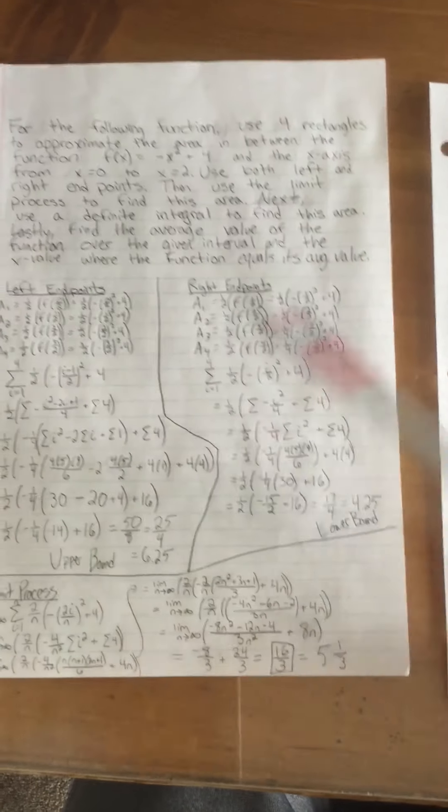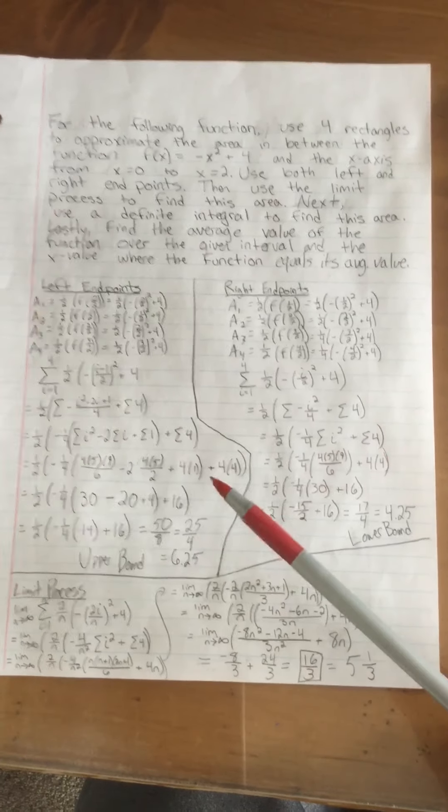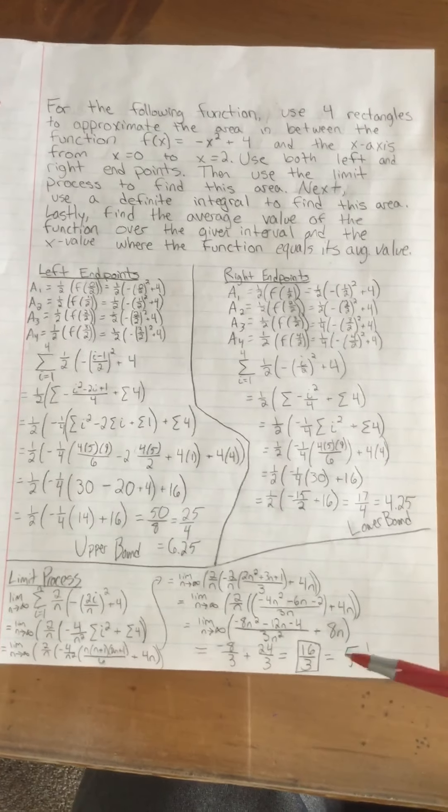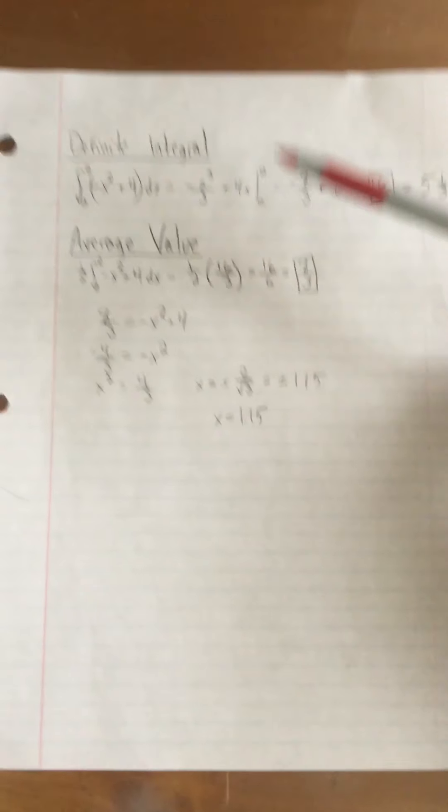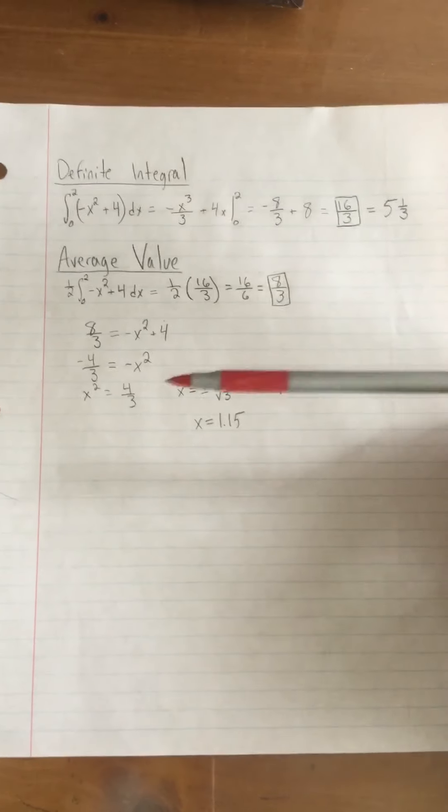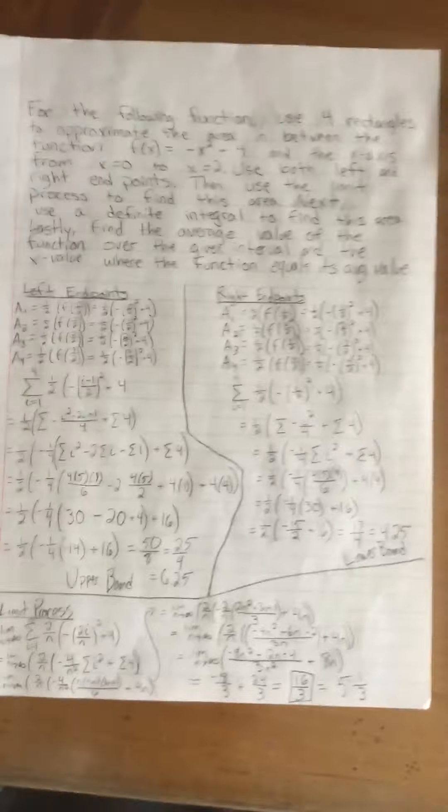First we went back to our left and right endpoints to approximate the area by thinking of these rectangles, then doing the limit process to find the exact value, and then finding a definite integral to find that same exact value. And then I just threw the average value in there to find the average value of the height of the graph and figuring out what x value has that height.